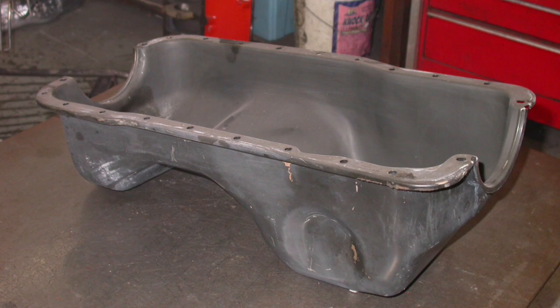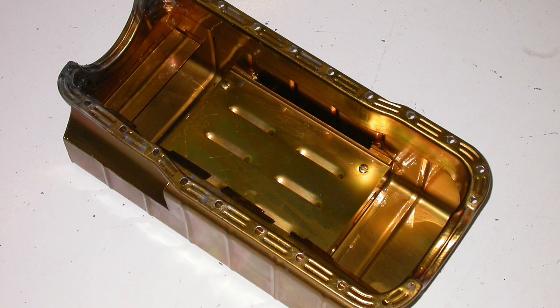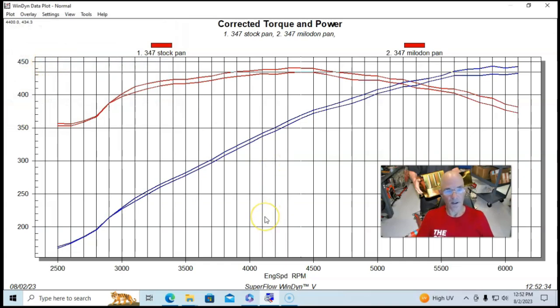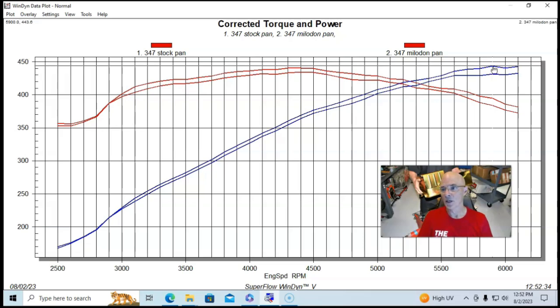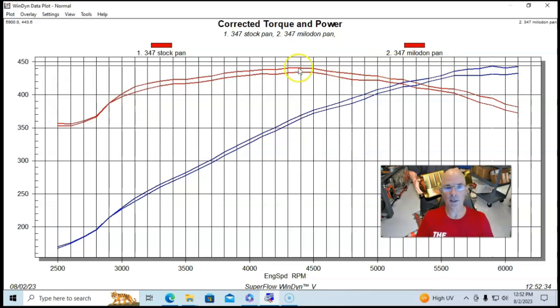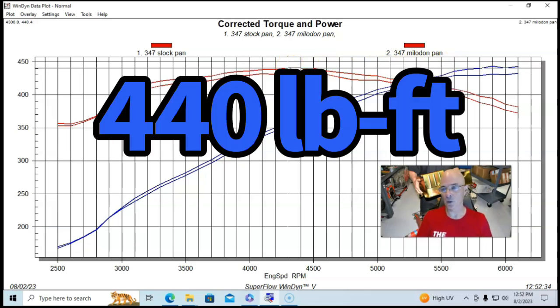So now let's take a look and see what happens when we upgraded to the Milodon pan. So what we did, and you can see we picked up, we didn't pick up too much power down low, which is pretty typical of oiling system mods. But we picked up power through a lot of the curve and the biggest gains came at the top of the rev range where this thing made 444 horsepower. Peak torque was up a little bit too, 440 foot pounds of torque.